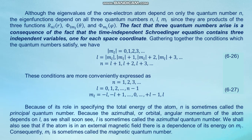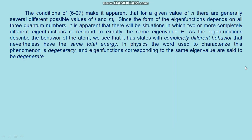n is called the principal quantum number because it specifies the total energy of the atom. l is called the azimuthal or orbital angular momentum quantum number because the azimuthal orbital angular momentum depends on l. m_l is called the magnetic quantum number because if the atom is in an external magnetic field there is a dependence of the energy on m_l. The conditions of 6.27 make it apparent that for a given value of n there are generally several different possible values of l and m_l.